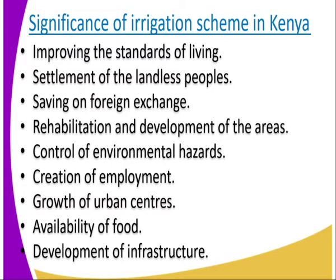Number four, we have rehabilitation and development of those areas. For example, the Perkerra irrigation scheme and the Mwea Tebere irrigation scheme — these were areas that were not developed and not used in any other way before the irrigation scheme started. Mwea Tebere was a swampy place, and the Perkerra area was subject to flooding. Number five, we have the control of environmental hazards, such as the checking of swampy areas and flooding in these lands.